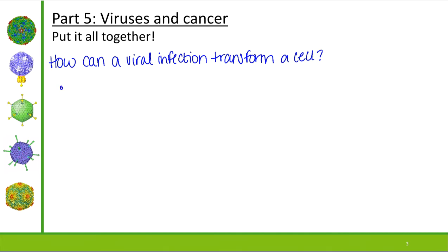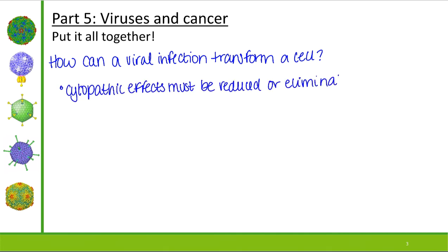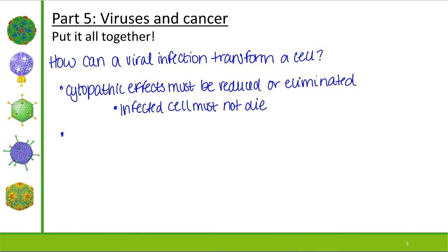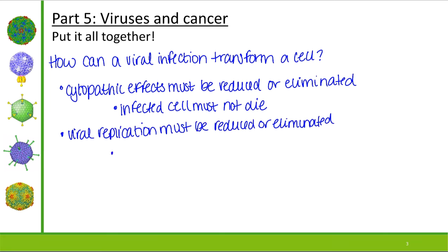There are three characteristics of transformed cells. First, cytopathic effects must be reduced or eliminated. Thinking back to cytopathic versus non-cytopathic viruses, cytopathic effects are when an infected cell dies. So if we reduce or eliminate those cytopathic effects, the infected cell must not die. Second, viral replication must also be reduced or eliminated, meaning transformed cells do not produce virions.